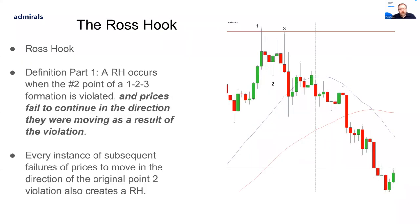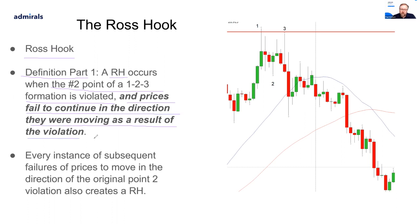What is a Ross Hook? A Ross Hook occurs when the number two point of a 1-2-3 formation is violated, and then prices fail to continue in the direction they were moving as a result of the violation. Every instance of subsequent failures of price to move in the direction of the original point two also creates a Ross Hook. This is a version of what I would call a 1-2-3 — you might actually look at it as a double top. In a 1-2-3 pattern or double top, you have point two. A Ross Hook occurs when that point two is violated.